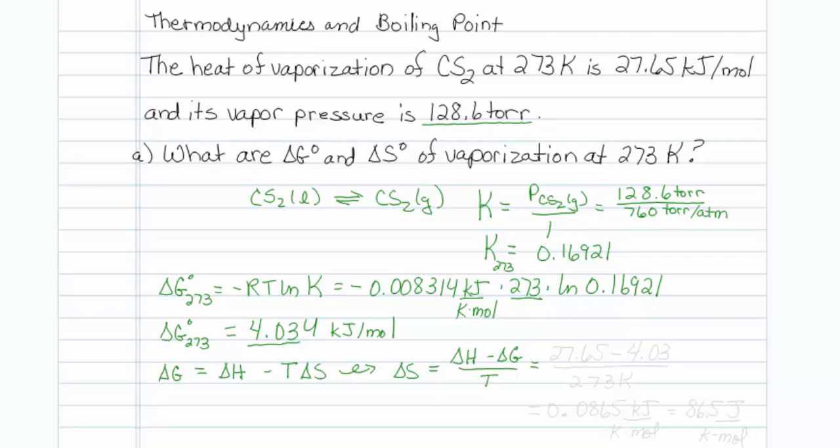My delta H is given, that's 27.65. My delta G I calculated, that's 4.03. My temperature is 273 Kelvin. So when I plug that into my calculator, I wind up with 0.0865, and that's in kilojoules per Kelvin mole. If I were going to put it in typical delta S units, that would be 86.5 joules per Kelvin mole.